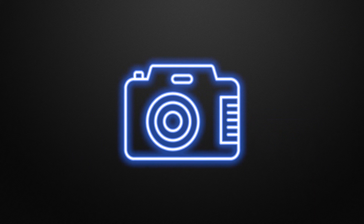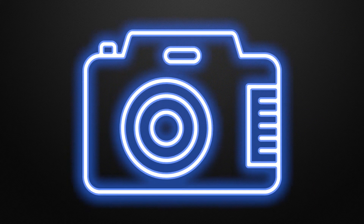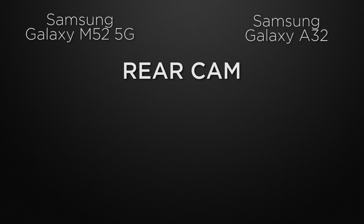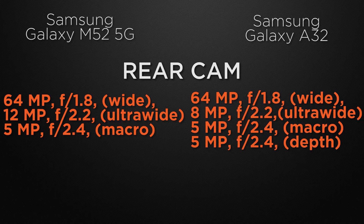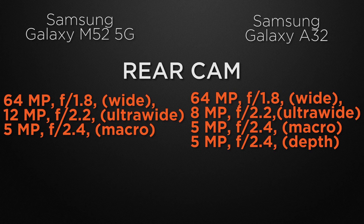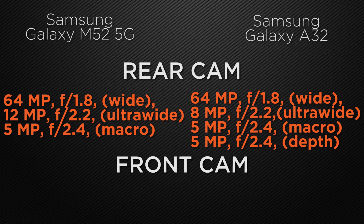Let the comparison start with the camera of the devices. Talking about the rear camera, the M52 has a triple camera setup: 64 megapixel wide camera, 12 megapixel ultrawide camera, and 5 megapixel macro camera. The A32 comes with a quad camera setup: 64 megapixel wide camera, 5 megapixel ultrawide camera, 5 megapixel macro camera, and 5 megapixel depth sensor. The winner here is the A32 because it has a quad camera setup with a depth sensor.